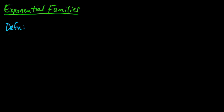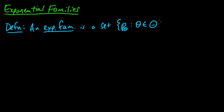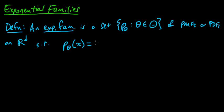Here's the definition. An exponential family is a set {P_θ : θ ∈ Θ} of PMFs or PDFs on R^D such that P_θ(x) = exp(∑_{i=1}^m η_i(θ) s_i(x)) h(x) / z(θ).